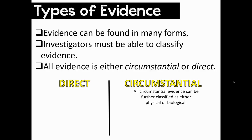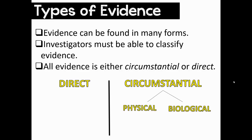Let's jump to evidence and start to look at some different forms of evidence and how to classify those types of evidence. Investigators are going to need to be able to classify evidence, and as a forensic student, you also need to be able to classify evidence. The first thing you need to know is that all evidence is either direct or circumstantial. Because all evidence will fall under one of those categories. Furthermore, if evidence is circumstantial, it will either be physical or biological.